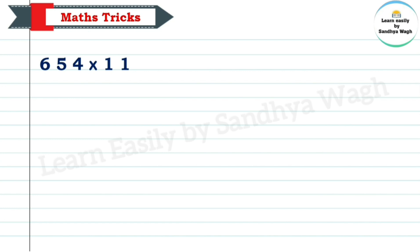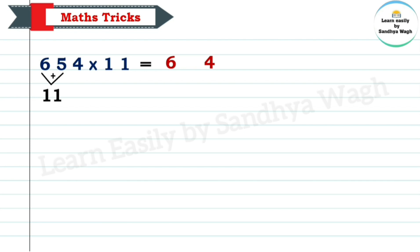Our 3-digit number is 654 multiplied by 11. What we will do? We will write our first digit 6 and our last digit 4 like this, and leave some space in between. Now, let's add 6 and 5. 6 plus 5 is equal to 11. We will write 1 over here and 1 as a carryover. Next, let's add 5 and 4. 5 plus 4 is equal to 9. Let's write 9 over here. Now, 6 plus 1 is equal to 7. So, our final answer is 7,194.